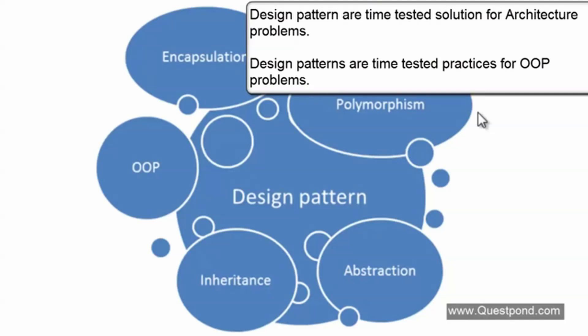My unofficial definition: design patterns are best practices or time-tested practices for object-oriented programming problems. When you are doing design patterns, you will suddenly feel — this is polymorphism, this is inheritance, this looks like encapsulation. As you do pattern after pattern, you will realize it is nothing but interfaces, abstract classes, inheritance, polymorphism, and encapsulation. Design patterns, when done practically, are nothing but solving OOP problems in a much better manner.